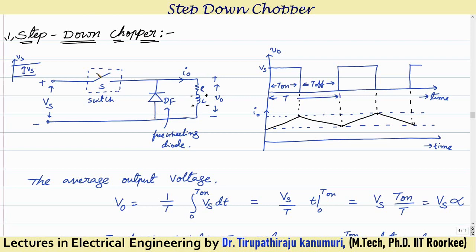Considering an ideal diode, the voltage across the diode is zero, so the output voltage drops to zero during this period. To summarize: when the switch is closed, the supply is directly connected across the load and energy is stored in the inductor, so current gradually increases. Once you turn off the switch, the inductor's EMF polarity reverses — bottom side becomes plus, top side minus — forward-biasing the diode. The energy stored in the inductor discharges through the diode, current decays, and output voltage equals zero.